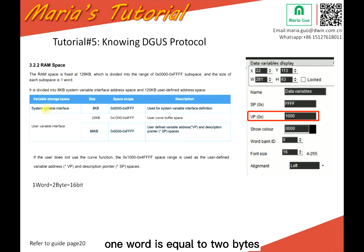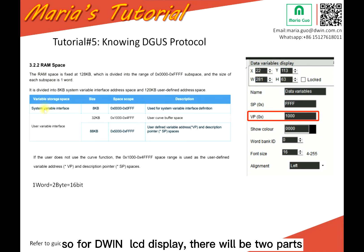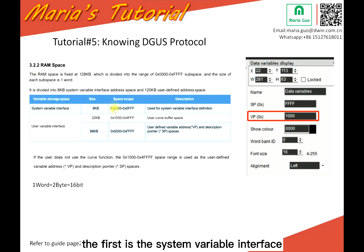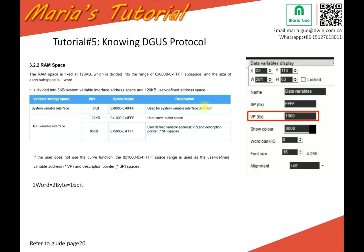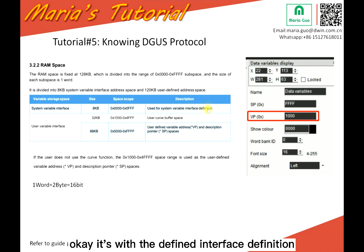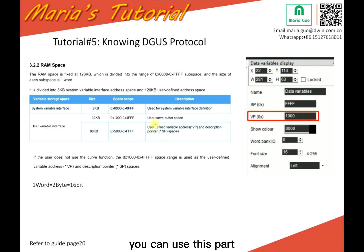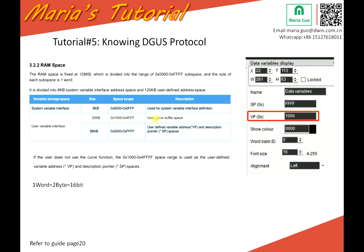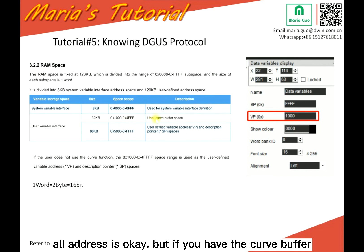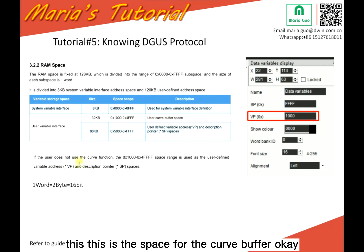One word is equal to 2 bytes. So for a given LCD display there will be 2 parts. The first is the system variable interface, which has 8 KB, and the space scope is defined. This is the interface definition. And this is the user variable interface — for your own project, you can use this part. If there is no code buffer, all of this is available. But if you have a code buffer, this is the space reserved for it.